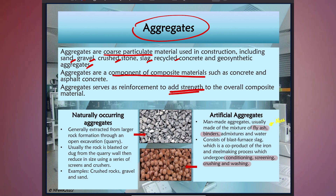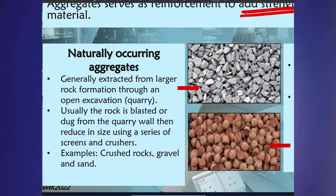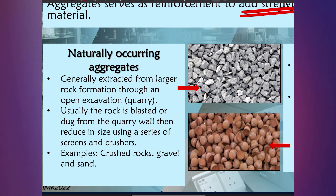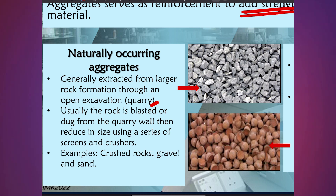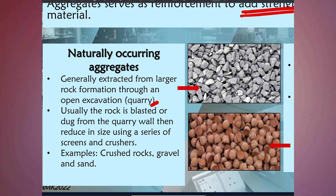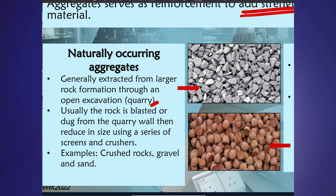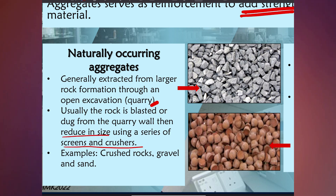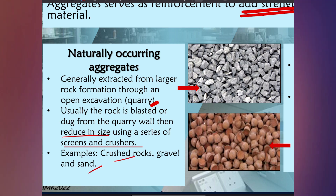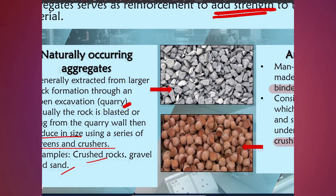For naturally occurring aggregates, they are generally extracted from larger rock formations through open excavations known as quarries. Usually the rock is blasted or dug from the quarry, then reduced in size using a series of screens and crushers. Examples include crushed rocks, gravel and sand.